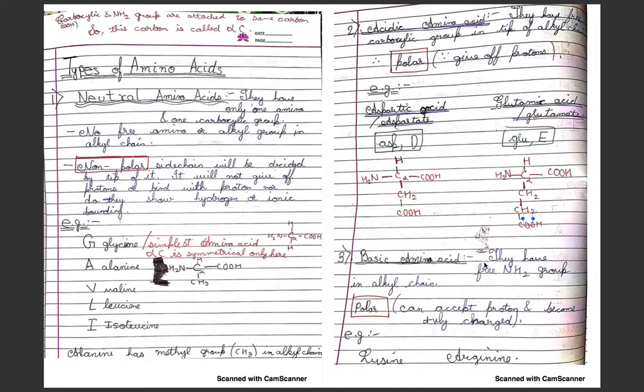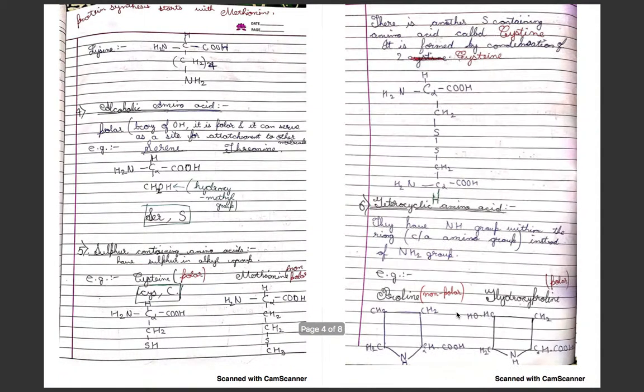Basic amino acids have free NH2 group in the alkyl chain. They are polar and can accept protons to become positively charged. Examples are lysine and arginine. Lysine has a structure with CH2 four times and then NH2 in the alkyl chain.